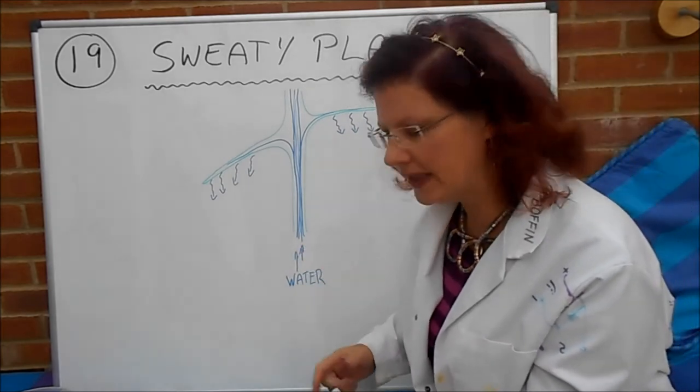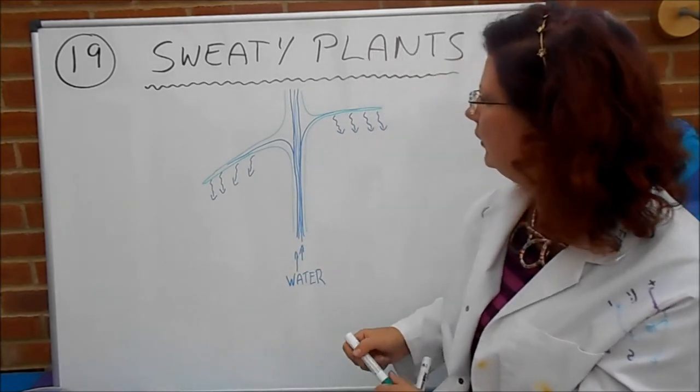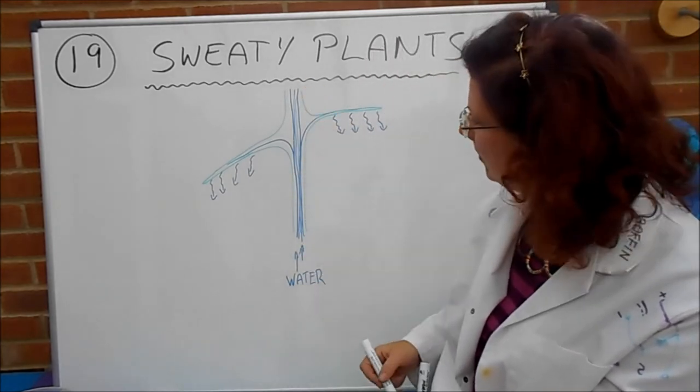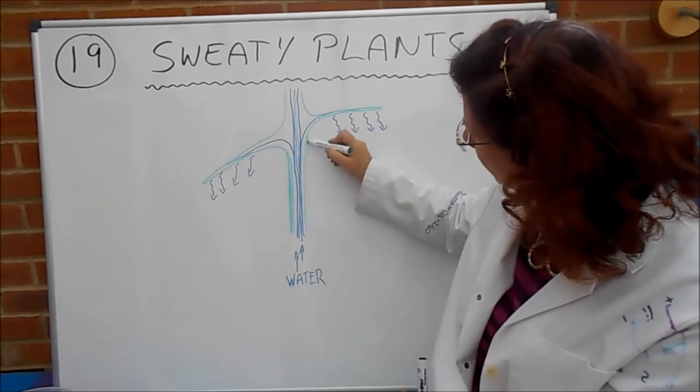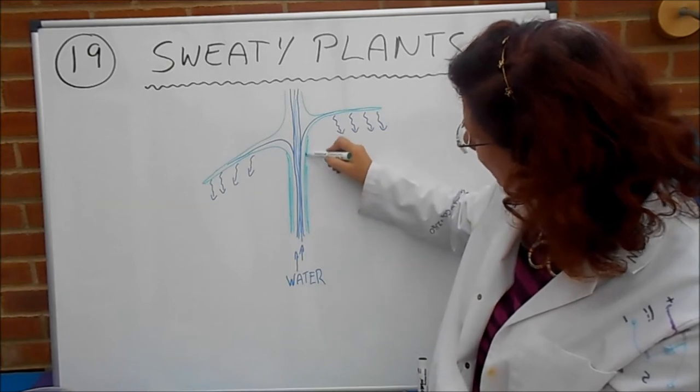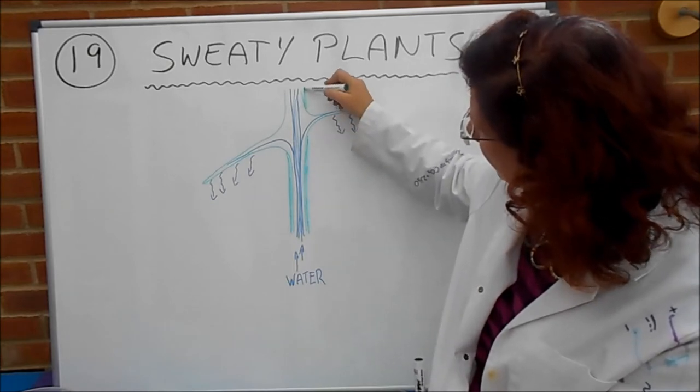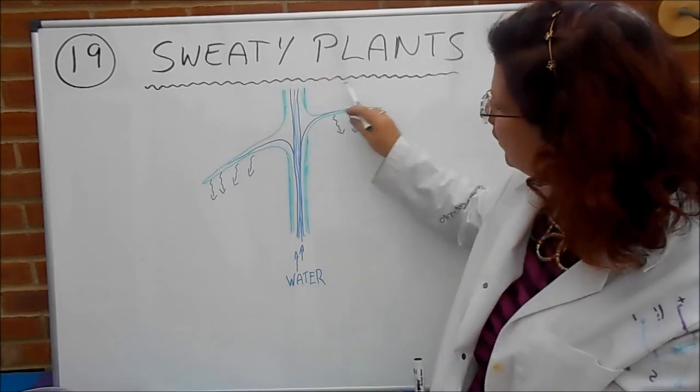So here's a really bad picture of the trunk or the stem of a plant. This green here is supposed to be the stem. So here's the kind of the thick stem walls. Okay.